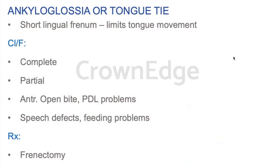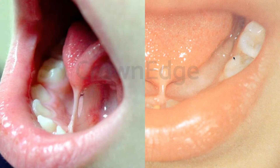Next is ankyloglossia or tongue tie, which is due to a short lingual frenum that limits tongue movement. If it is complete tongue tie, movement is completely restricted; if partial, it is limited. Anterior open bite and periodontal problems leading to pockets are very common with ankyloglossia. Speech defects and feeding problems also occur. Treatment is frenectomy of the highly attaching short lingual frenum.